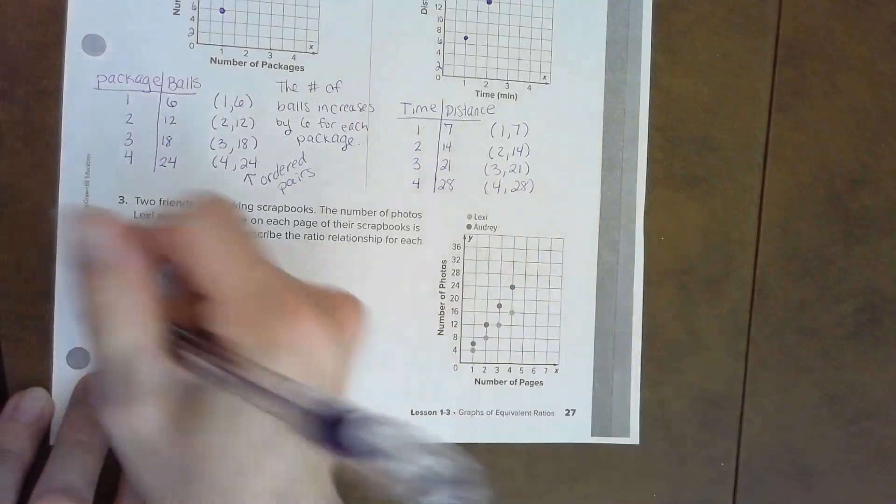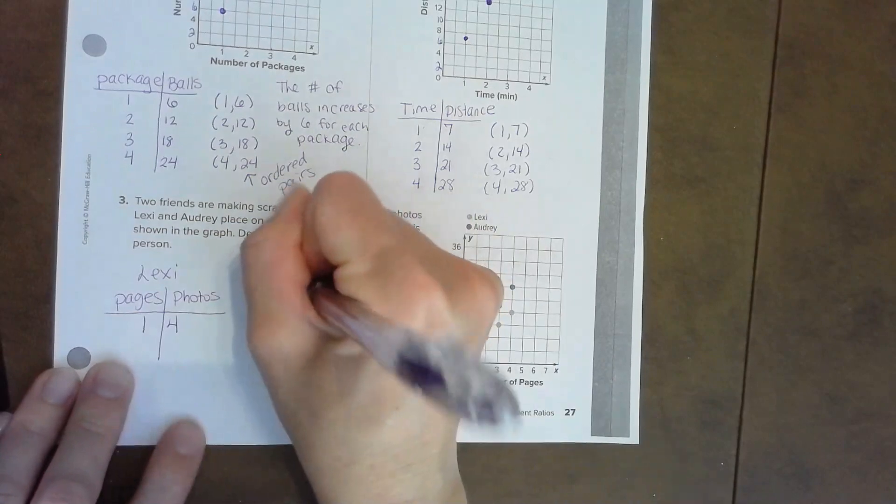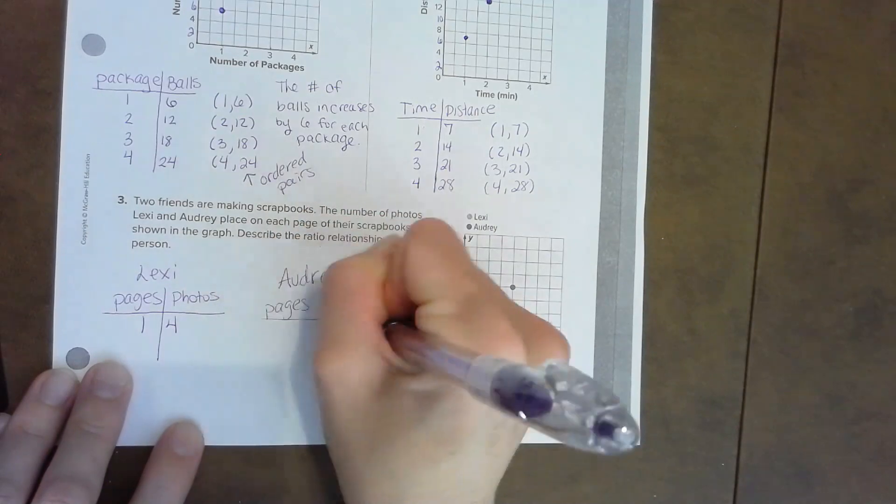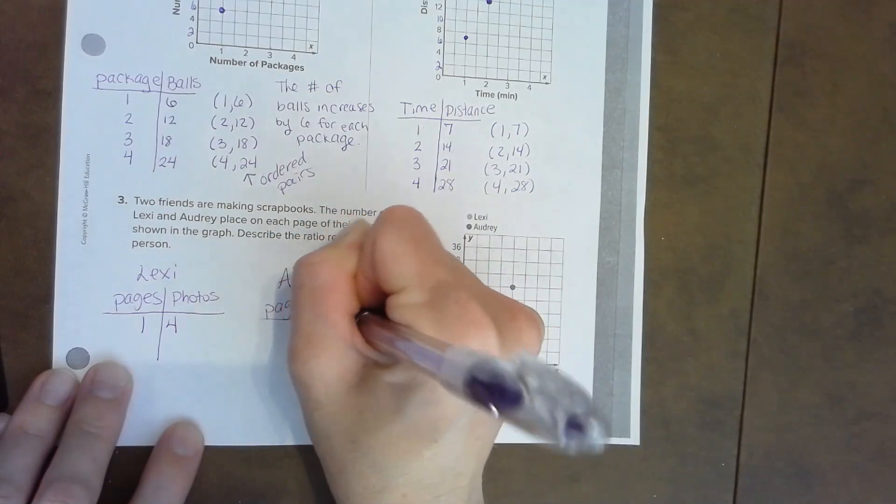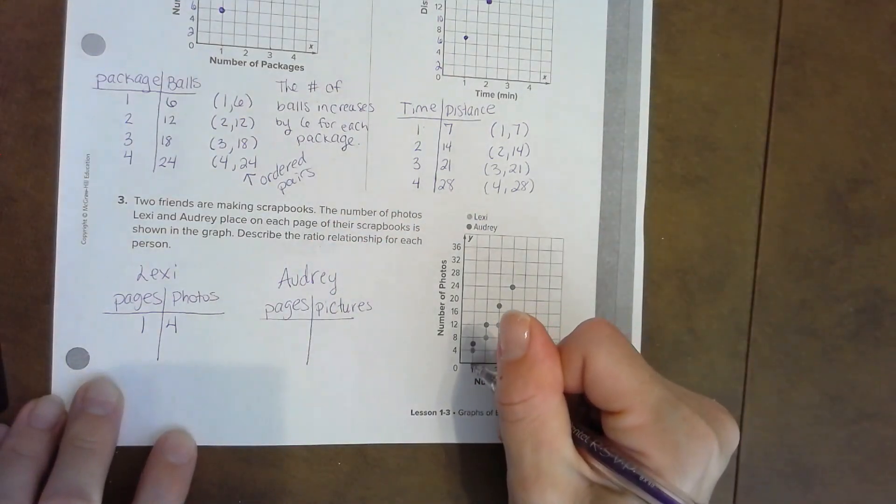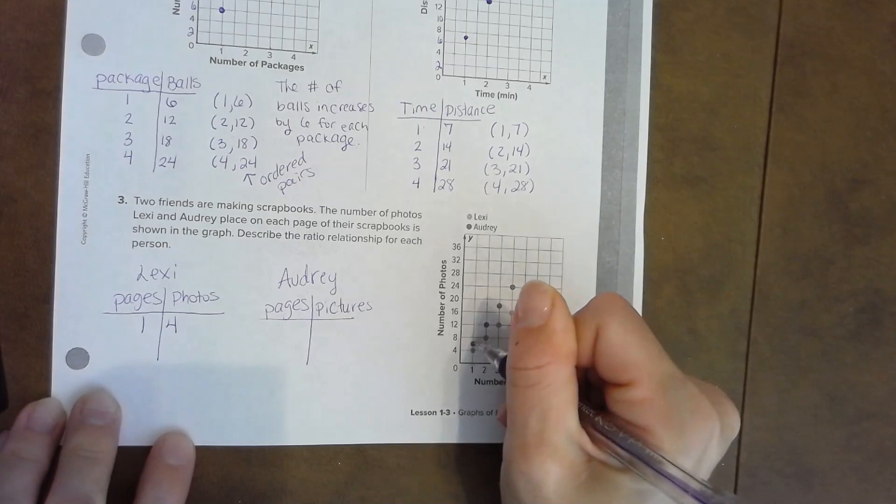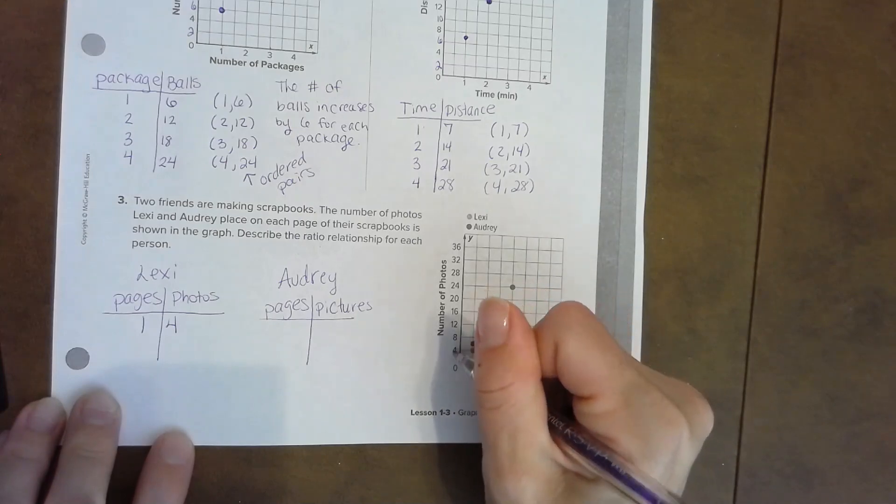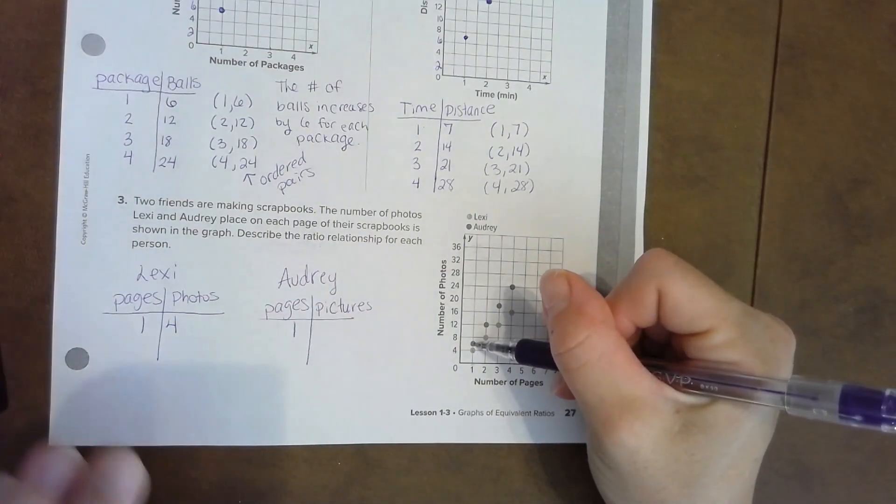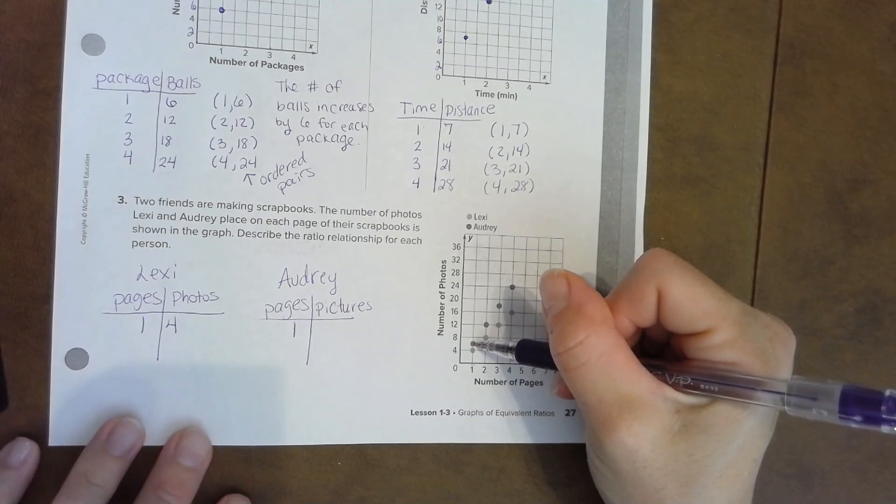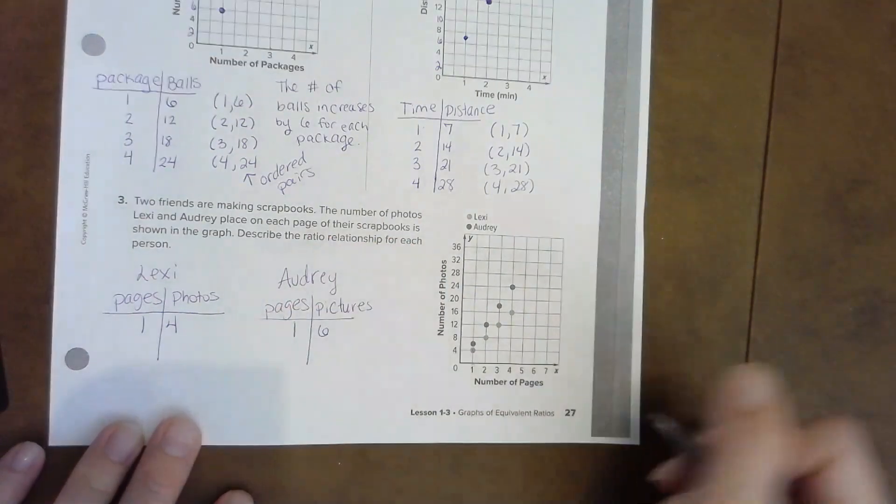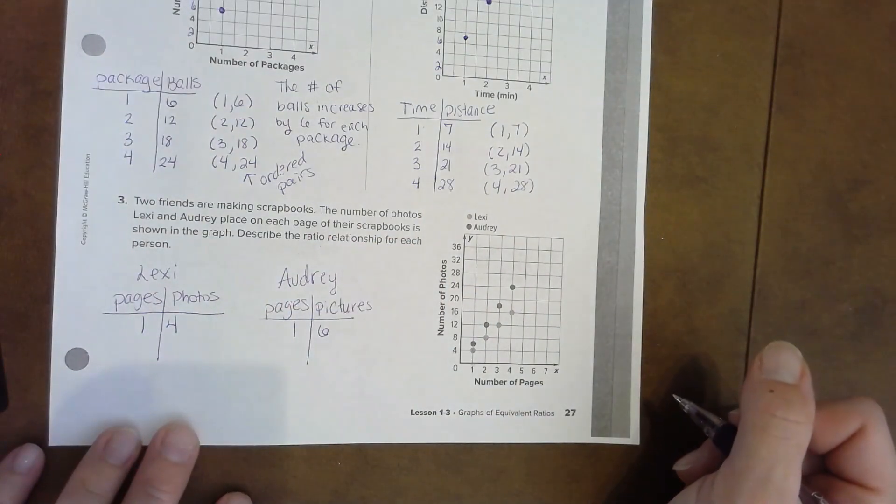Lexi's in light. She's one—one page, she has four pictures. One page, four pictures. Now I'm going to look at Audrey. Pages, pictures. Audrey's the one in dark. For every one page she puts—and I have to figure out what number's between four and eight. So on one page we have four, five, six, seven, eight.